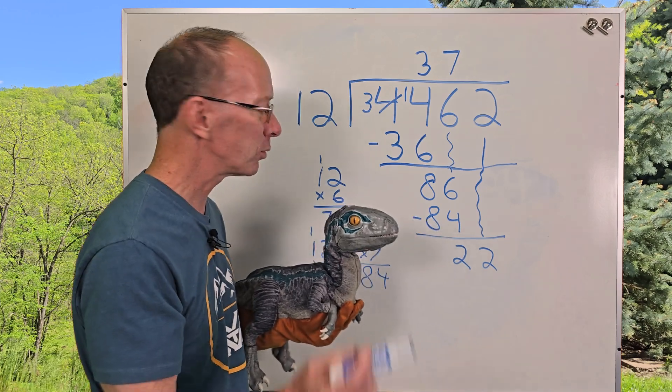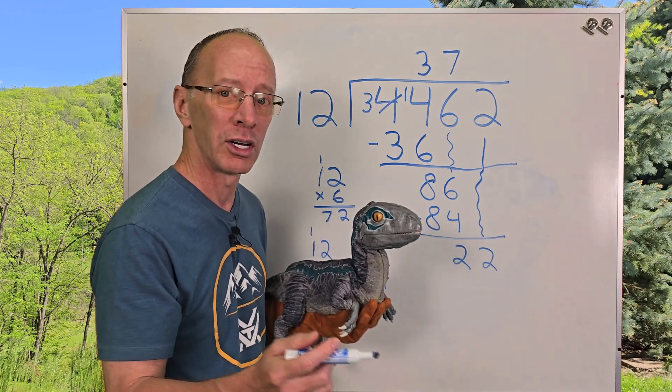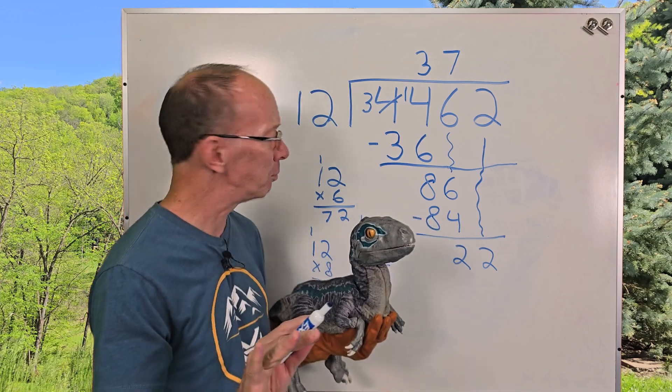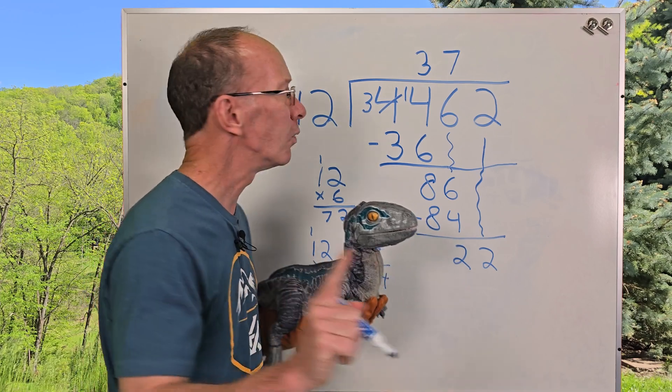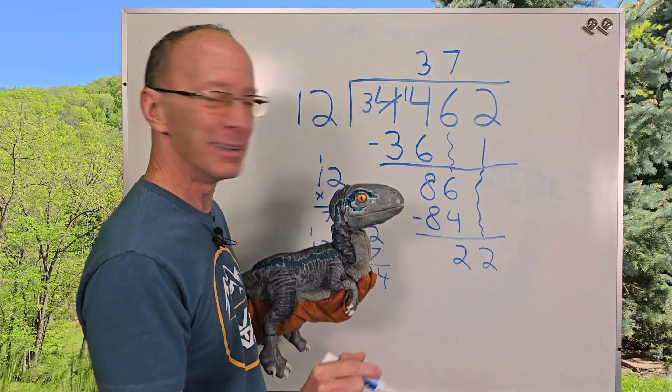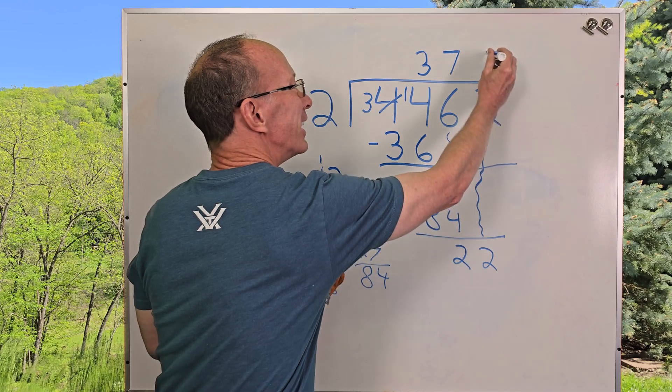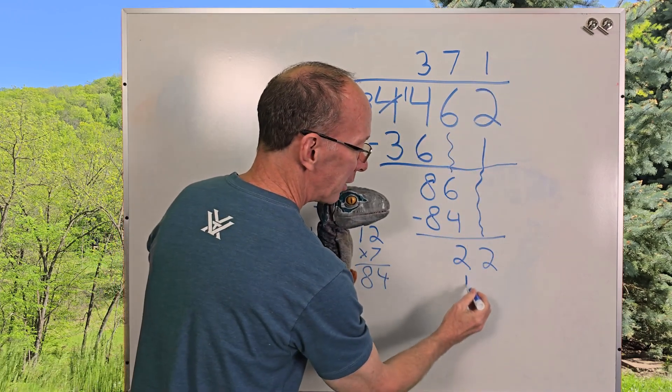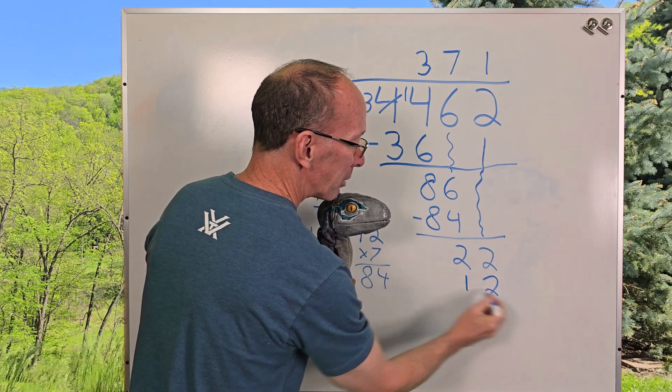How many times can I put 12 into 22? Well, 12 times 1 is 12. 12 times 2 is 24. Whoa! Too big! Just 12 times 1. Can you count to 1? So I'm going to put 1 right here. And then 1 times 12 is 12 again. And I put it right there. And now I'm going to subtract.